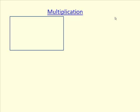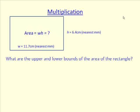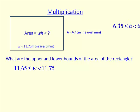Let's now look at multiplication by looking at the area of a rectangle. This rectangle has two measurements — height and width — 6.4 and 11.7 centimetres, measured to the nearest millimetre, which is the nearest 0.1 of a centimetre. The width is in between 11.65 and 11.75, and the height is in between 6.35 and 6.45. Those are the lower and upper bounds of those two measurements.